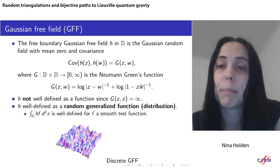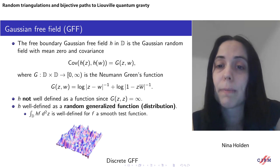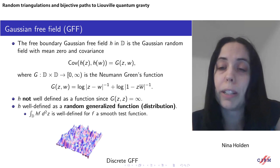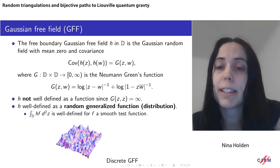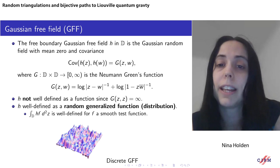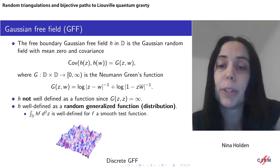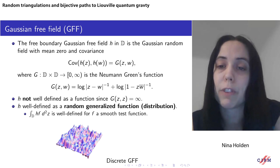Heuristically speaking, if z is any point in the unit disc, then h(z) will be a normal random variable with infinite variance. Although the Gaussian free field is not well-defined pointwise, one can argue that it is well-defined as a random distribution or generalized function. This means that if f is a smooth test function, we can integrate f against the Gaussian free field to obtain a random real number, which is normally distributed with mean zero and variance depending on the particular choice of test function f.